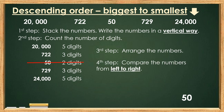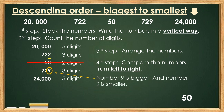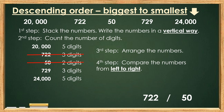Step number 4: Compare the numbers from left to right. We have 2 numbers with 3 digits, so let's start from left to right. 7 and 7 are the same, so let's go to the next number. 2 and 2 are also the same, so let's move on. 2 and 9 are not the same — number 9 is bigger and number 2 is smaller. So we have to put 722 first and 729 is next. Remember, we are arranging from biggest to smallest, so the smallest number should be on the right.